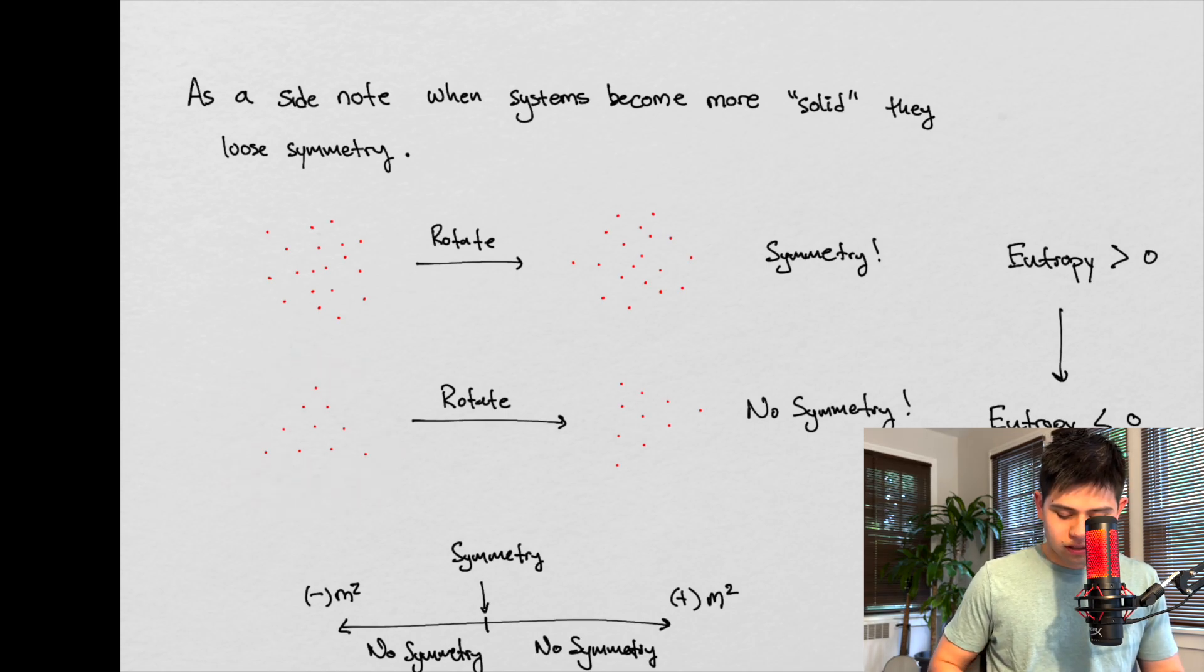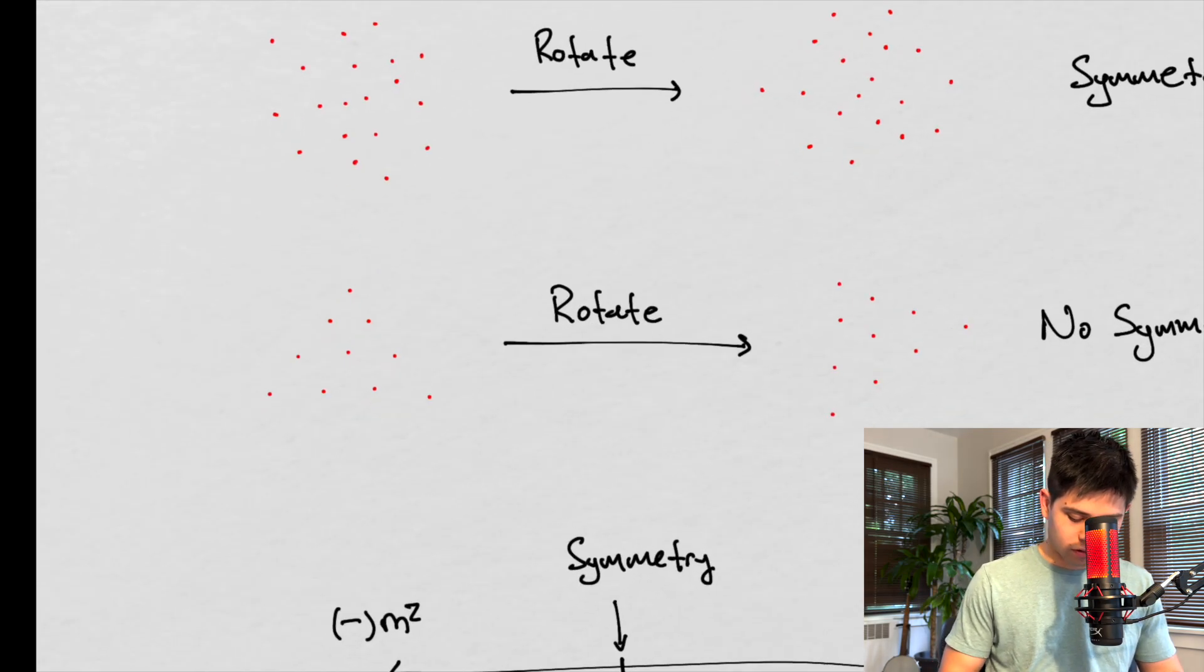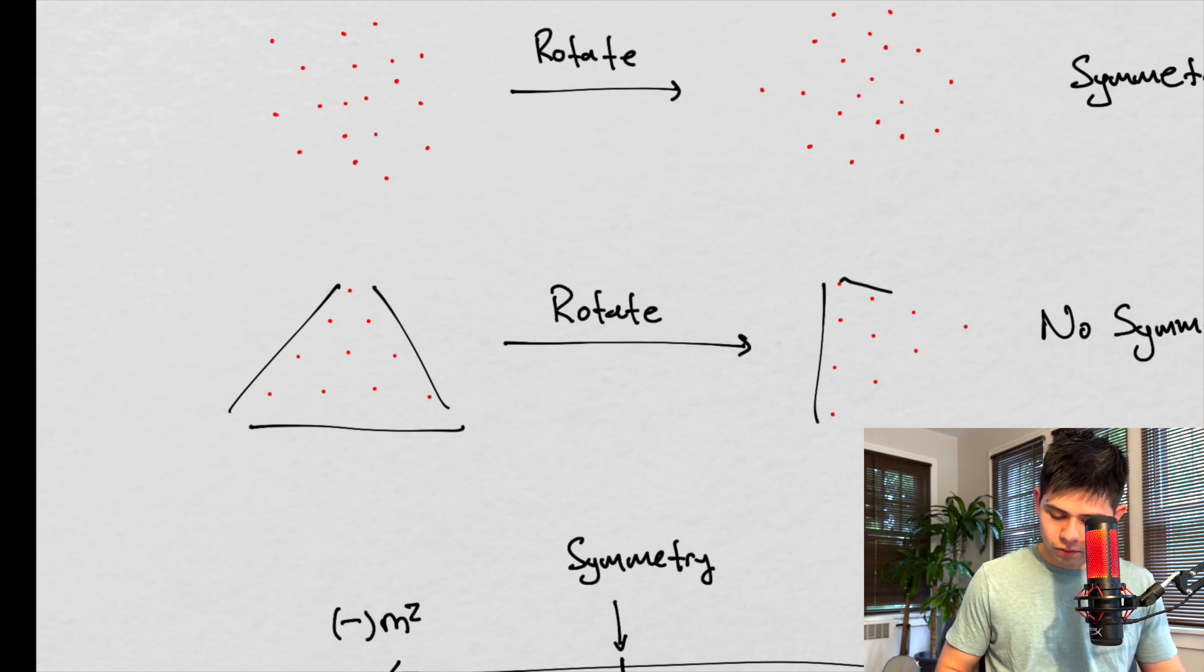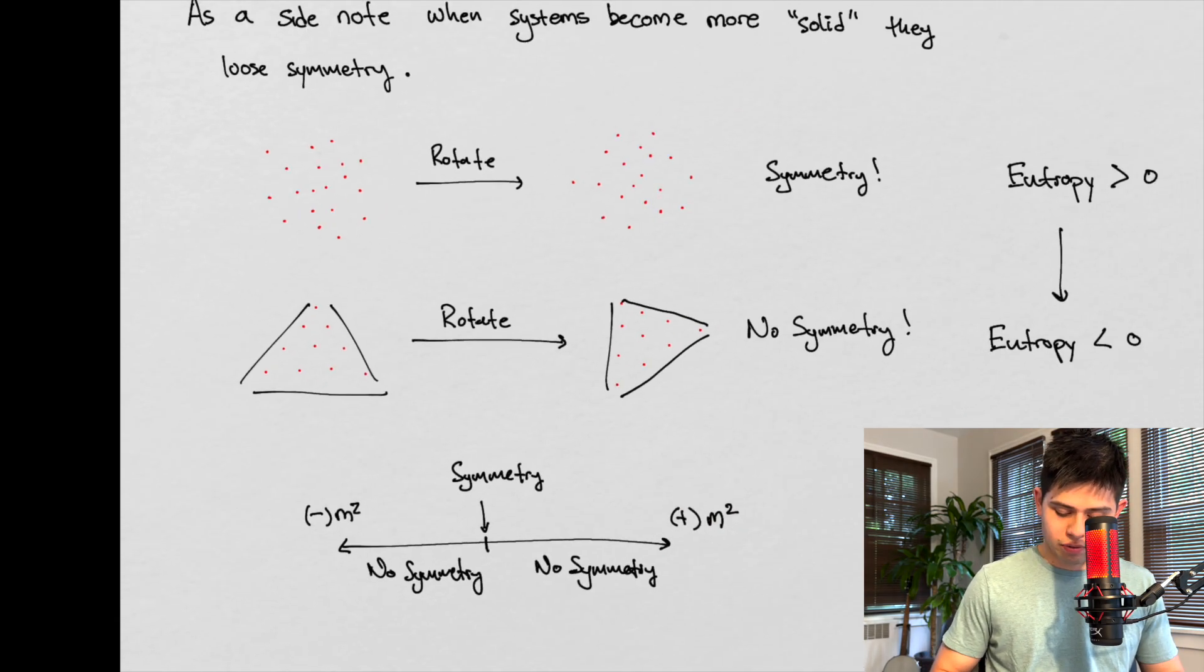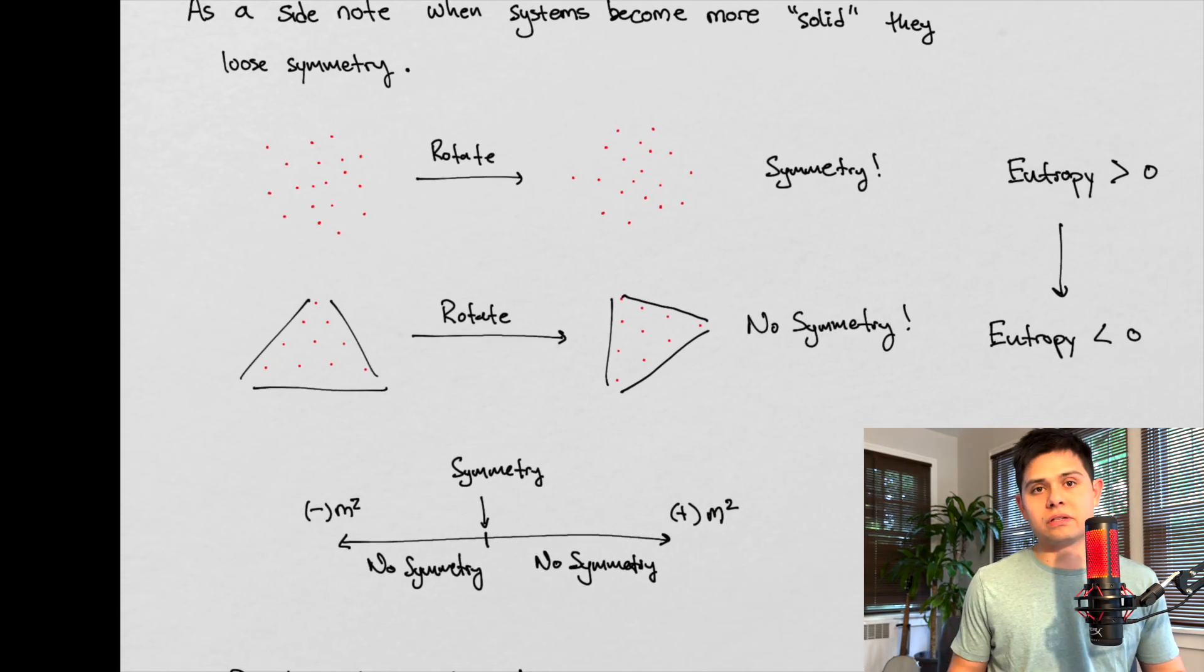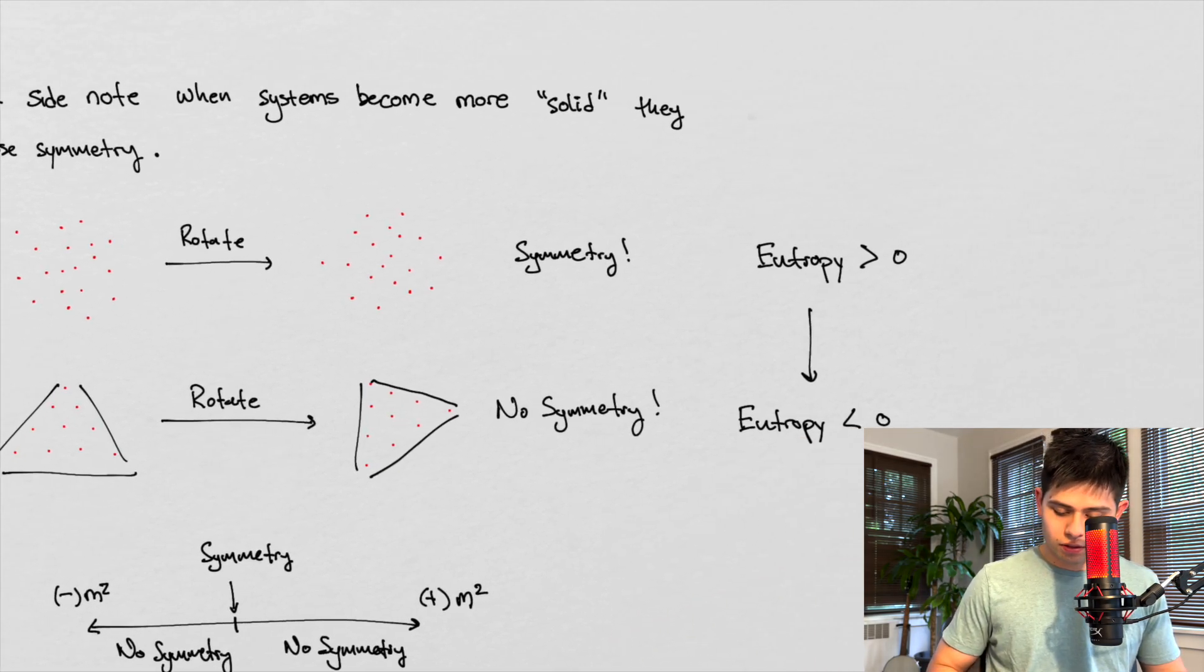And we then we rotate this guy. Well that looks a little bit different, right? If we can trace a triangle around this. Right? And then we trace a triangle around here. Well, we rotated this by say, some arbitrary angle. These don't look the same anymore under this rotation. So that means no symmetry. Okay.